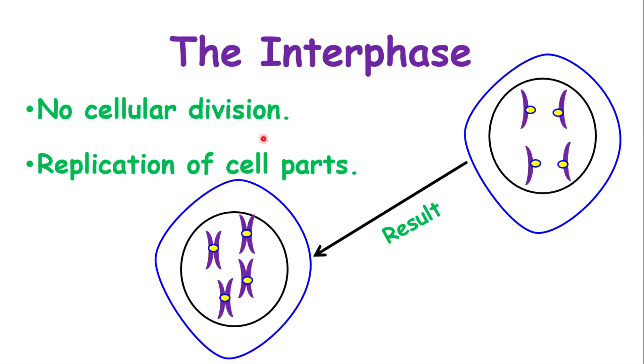In the interphase, there is no cellular division. However, there's a replication of the cell parts taking place, which means everything in the cell will duplicate. If you started out with four chromosomes and four chromatids, you'll get eight chromatids by the end of the interphase.